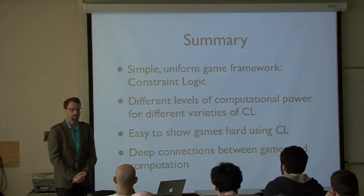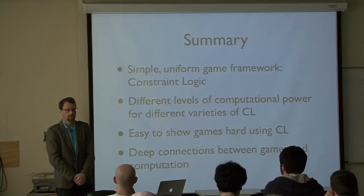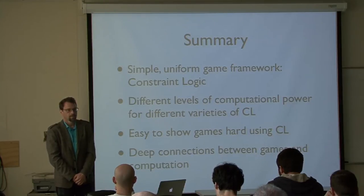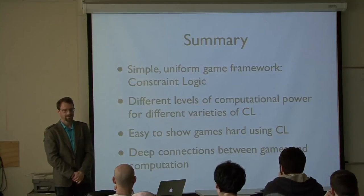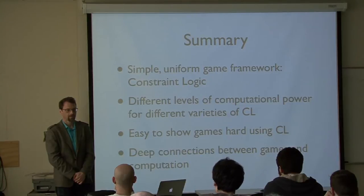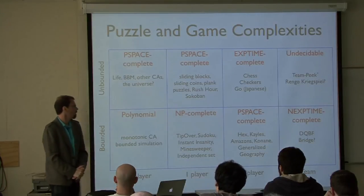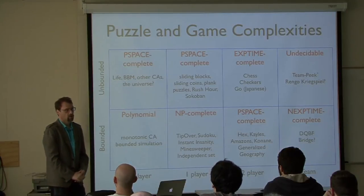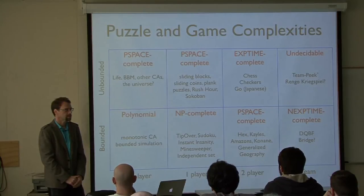Q: Are there dichotomy results — like all puzzles in this framework belong to either P or NP — that you can show using the constraint logic framework? A: I have not done anything like that; that's an interesting question. Q: Have you done any work with puzzles or games involving random or semi-random elements? A: I have not, and that's an obvious extension. There has been a lot of work on games with random elements and appropriate complexity results, so there ought to be a randomized version of constraint logic. You could also imagine a quantum version of constraint logic, though I haven't gone down those roads yet.